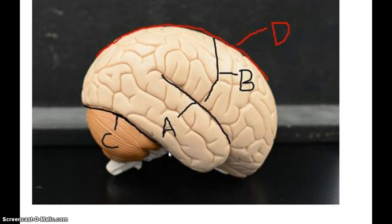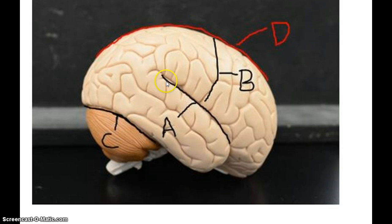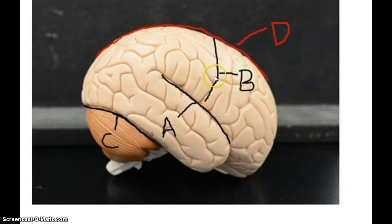Now we're going to look at the significant sulci and fissures of the brain. The one that goes between the two hemispheres is the longitudinal fissure. This is the central sulcus, the lateral cerebral sulcus, and the transverse fissure. Again: the longitudinal fissure goes between the hemispheres of the cerebrum, the central sulcus, the lateral cerebral sulcus, and the transverse fissure.